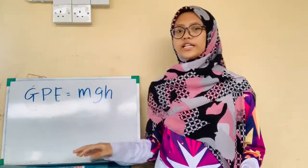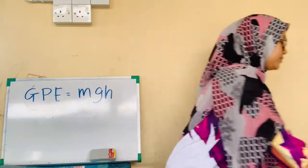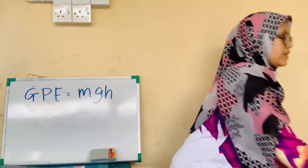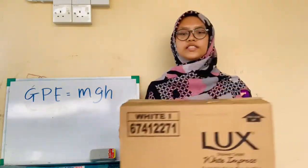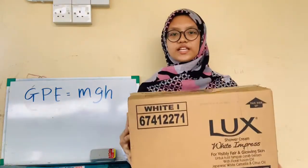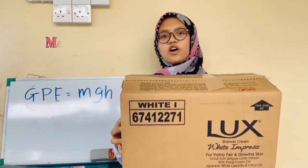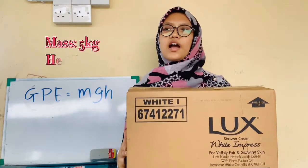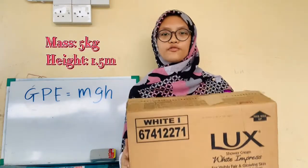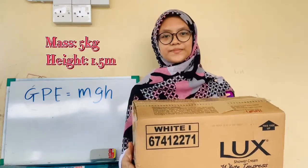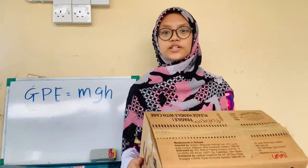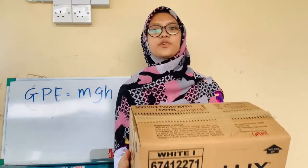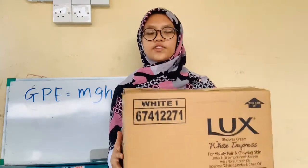For example, a box is being lifted with a mass of 5 kg to a height of 1.5 meters. How do you calculate the Gravitational Potential Energy of this box?